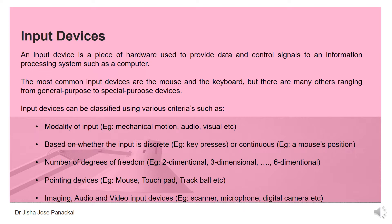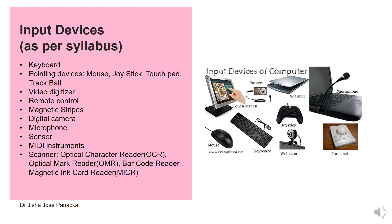We will learn some of the most common devices in this module based on your syllabus. These are the input devices we need to understand: keyboard, and pointing devices such as mouse, joystick, touchpad, and trackball. Then video digitizer, remote control, magnetic stripes, digital camera, microphone, sensor, and MIDI instruments — that is an interface for musical instruments. Then scanner, which can be of varying types: optical character reader (OCR), optical mark reader (OMR), barcode reader, and magnetic ink card reader. We will learn each and every one in detail.